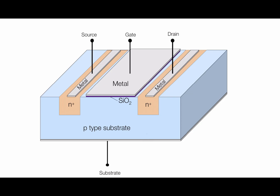Hello everyone, welcome back to my YouTube channel. In my last video I already explained the types of MOSFET, like enhancement type MOSFET and depletion type MOSFET, and the structure of the MOSFET and its different parts like the metal, drain, source, semiconductor, and oxide. Today we will go through the working principle of the MOSFET and how current flows from the drain to the source terminal.